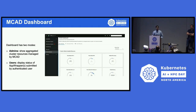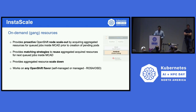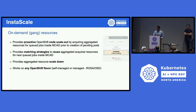MCAD has a dashboard that supports different personas — showing aggregate cluster utilization from the admin persona, and AppWrapper statuses from the user persona. The next ingredient in our recipe is the node autoscaler called InstaScale. If an AppWrapper is pending inside the MCAD queue due to insufficient resources, InstaScale picks up such AppWrappers to acquire the gang of resources needed to run. Since acquiring gang resources can be time-consuming, we use reuse policies to transfer resources acquired for previous workloads to the next workload. InstaScale has the capability to scale down to zero and works on a wide variety of OpenShift flavors.